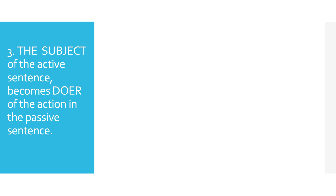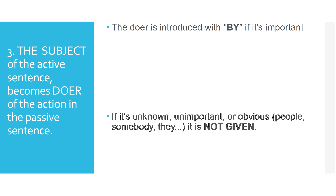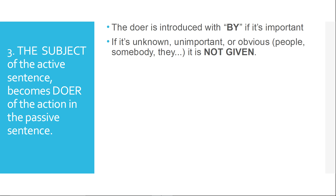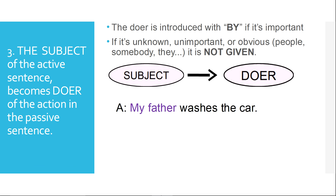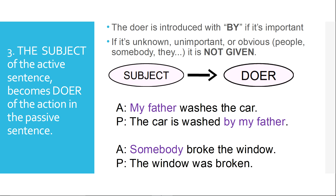The third step is what to do with the subject of the active sentence. The subject of the active becomes the doer of the action in the passive sentence. The doer is introduced with 'by' only if it is important or a specific person. If it's not important, if you don't know who the subject is, or if it's obvious — like 'people,' 'somebody,' or 'they' — we don't introduce it with 'by.' For example: 'My father washes the car' becomes 'The car is washed by my father' — my father is specific. But 'Somebody broke the window' becomes simply 'The window was broken,' because somebody is not specific.